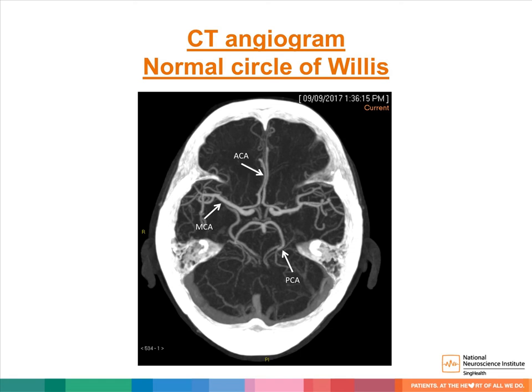Now we move on to CT angiograms. This is an example of a normal CT angiogram showing the Circle of Willis. We can see bilateral middle cerebral arteries directed horizontally. The anterior cerebral arteries are directed anteriorly, and the posterior cerebral arteries are directed posteriorly.